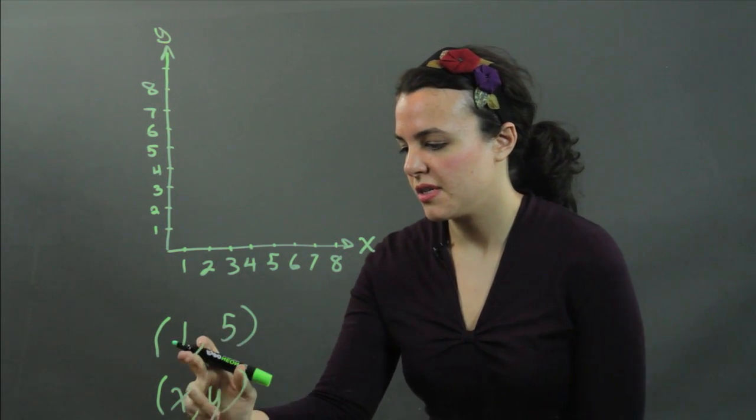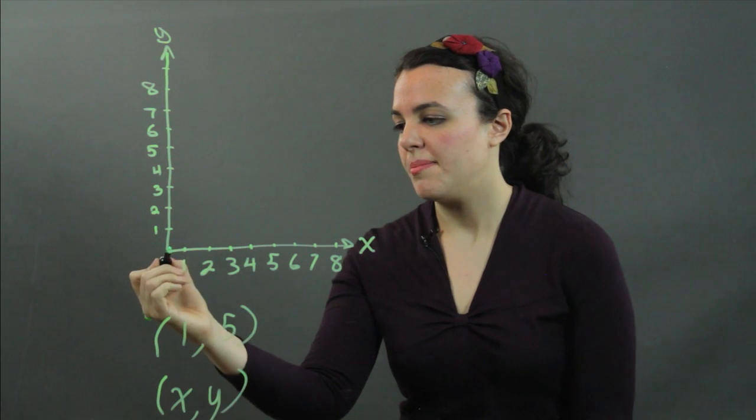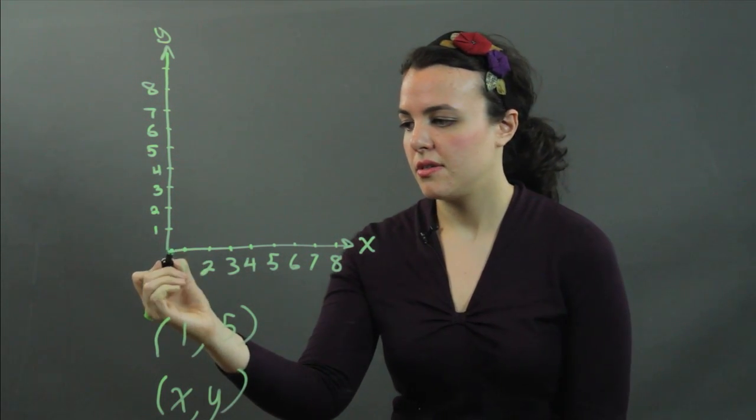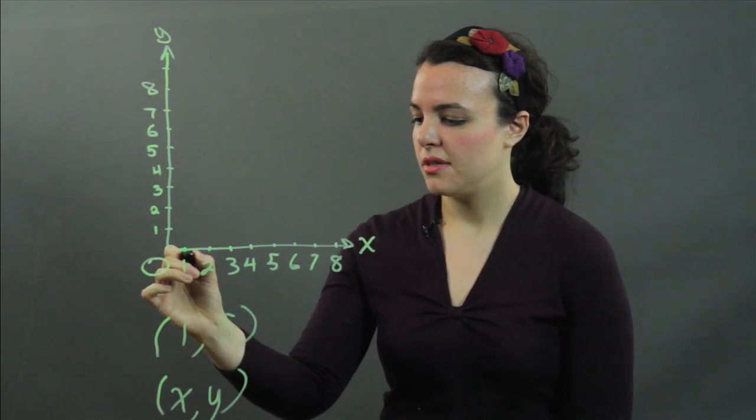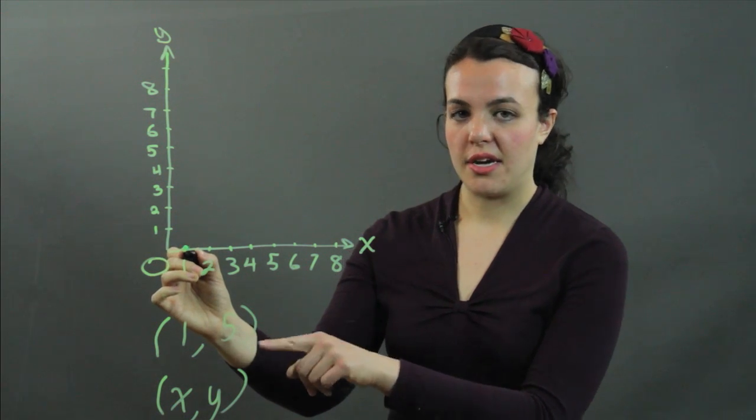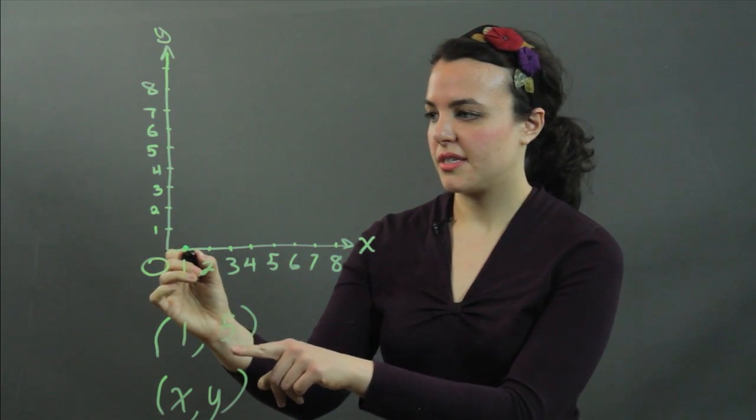Let's go to this example. My 1 tells me I'm out by 1 on the x-axis, so I start at the origin here and I go over 1. And this 5 tells me that I go up on the y-axis up to 5.